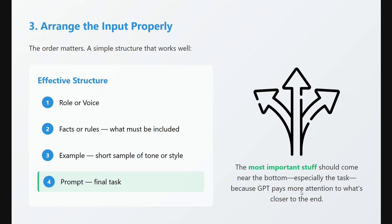Arrange the input properly — this is one of the most important steps. Which factor should come first, which next — that matters greatly. An effective structure is: role or voice, then facts or rules, then what must be included, then examples, and finally the prompt. The most important stuff should come near the bottom, towards the end of the prompt, because GPT pays more attention to what's closer to the end. Ordering matters a lot. The structuring of your context is very crucial.